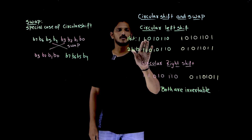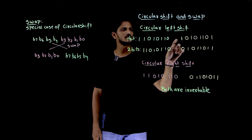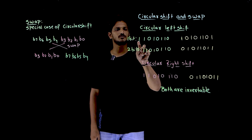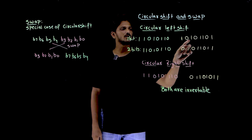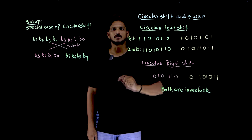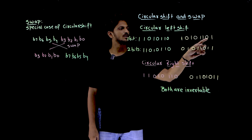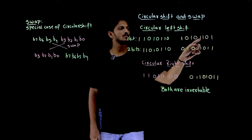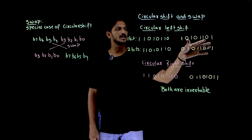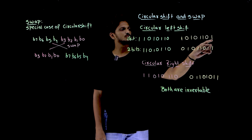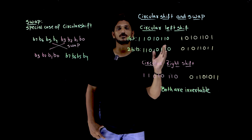So for a 1-bit left shift, the last bit goes to the front. The output has that 1 at the front, and the remaining bits are as they are: 0, 1, 1, 0, 1, 0, 1. These bits remain as they are, and the last bit comes to the front. This is what left shift means.